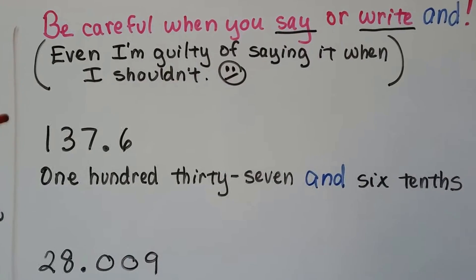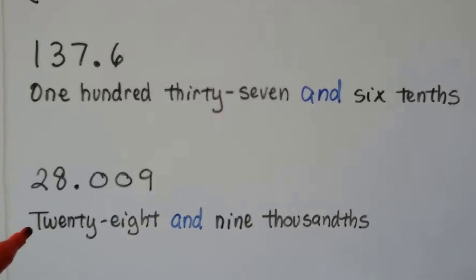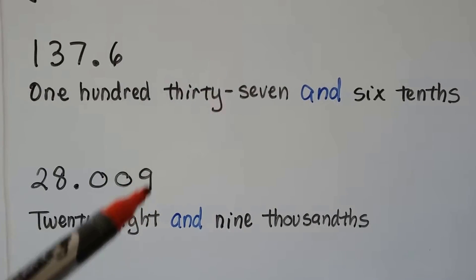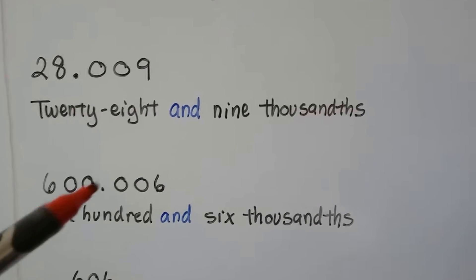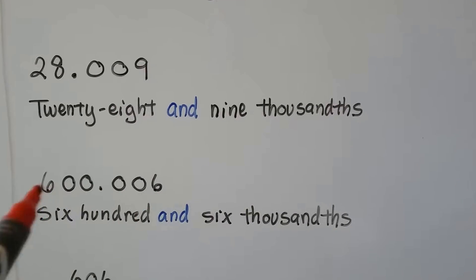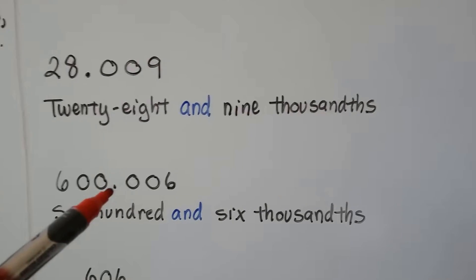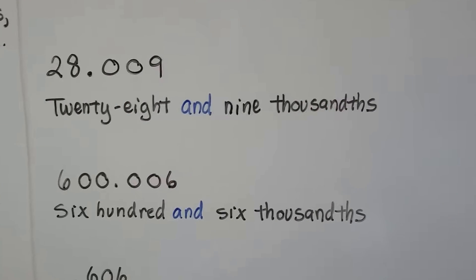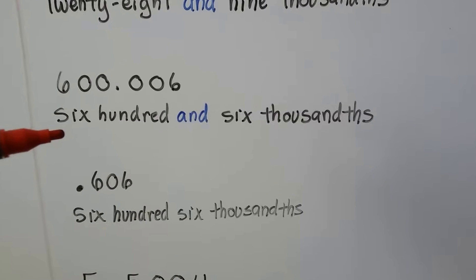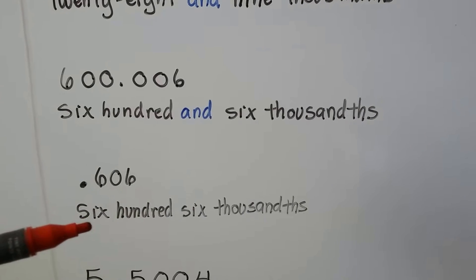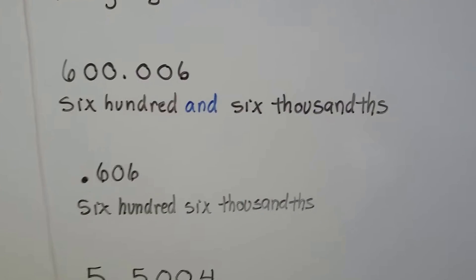We have 137 and — that's the decimal point — six-tenths. Here we have 28 and nine-thousandths, in the thousandths place. Here's an important example: 600 and six-thousandths. It's like a mirror of each other — zeros on both sides with a six on the outsides. But it's six-hundred and, the decimal point, six-thousandths, because that six is in the thousandths place. Now look at the difference: six-hundred and six-thousandths versus six-hundred six-thousandths. The only difference is the word 'and,' which represents the decimal point. That's why it's so important not to say or write 'and' when you shouldn't.